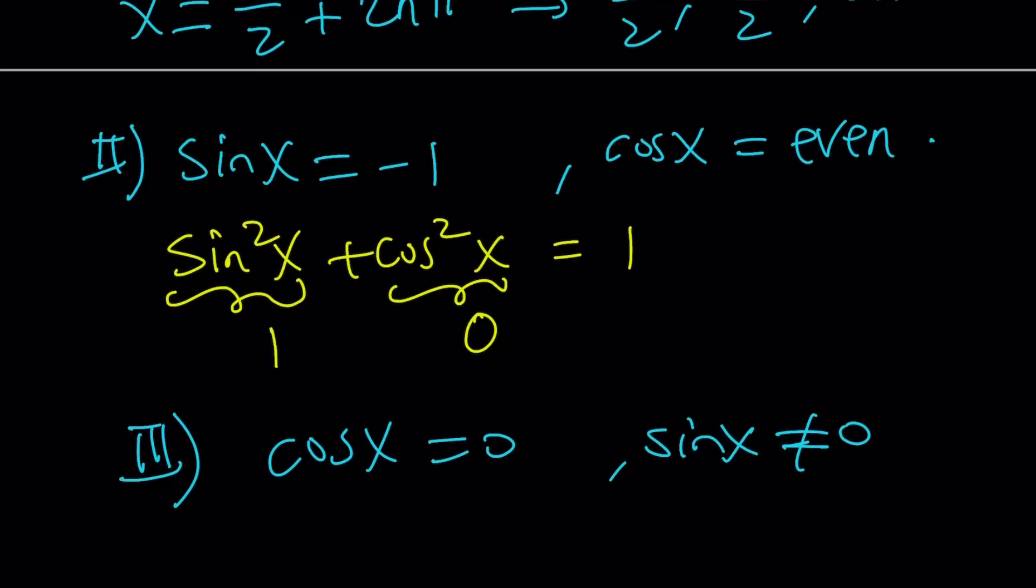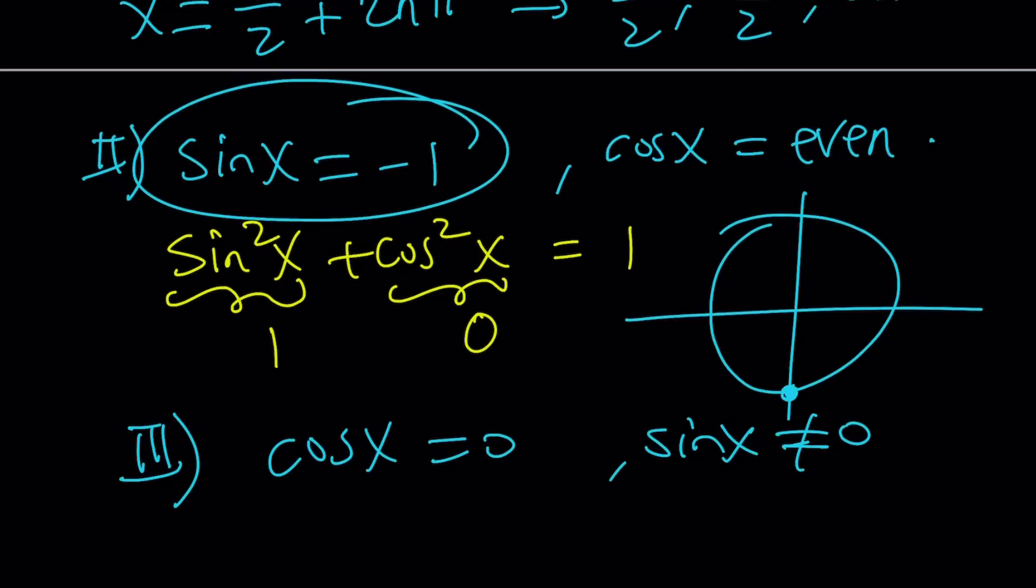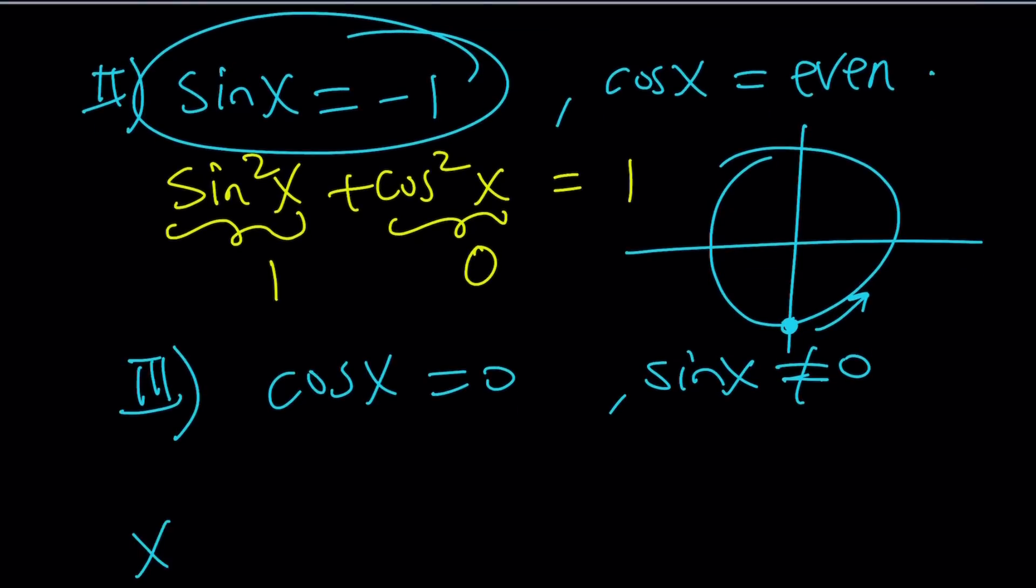So, the third case and the second case are identical, pretty much. So, let's go ahead and just solve it. Sine x equals negative 1. What does that mean? It means on the unit circle, x is going to be at 3 pi over 2, but you are free to rotate and make another revolution, so on and so forth. So, that means x equals 3 pi over 2 plus 2k pi. So, this implies 3 pi over 2 plus 7 pi over 2 plus 11 pi over 2, so on and so forth.